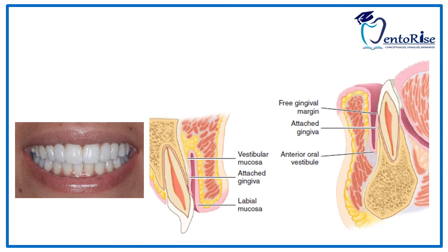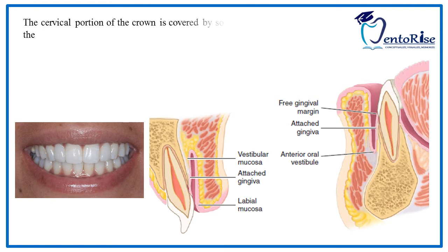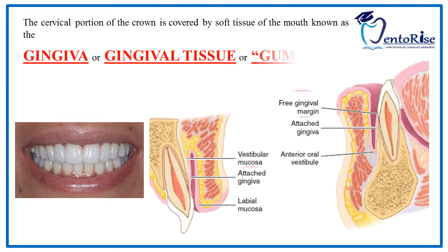The crown is visible in the oral cavity, but the cervical line cannot be viewed in normal cases. This is because that portion of the crown is covered by a soft tissue called the gingiva, or gingival tissue — in layman's language, also called gums. Notice the black arrow here in the figure.